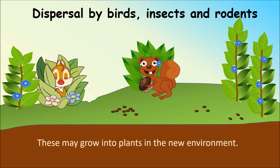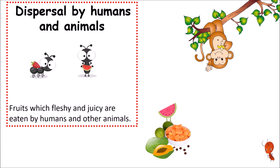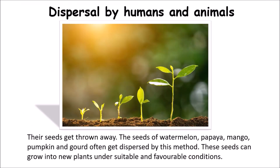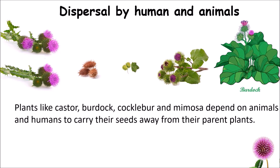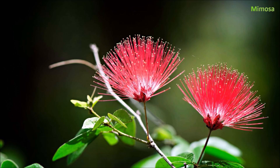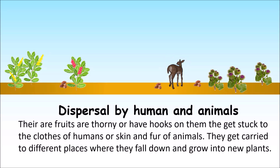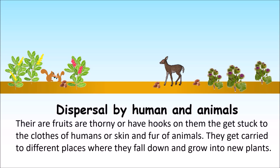Dispersal by humans and animals: Fruits which are fleshy and juicy are eaten by humans and other animals, and their seeds get thrown away. Seeds of watermelon, papaya, mango, and pumpkin often get dispersed by this method. Plants like castor, burdock, cocklebur and mimosa depend on animals and humans to carry their seeds away from their parent plant. Their fruits are thorny or have hooks on them, which get stuck onto the clothes of humans or the skin and fur of animals, carrying seeds to different places.